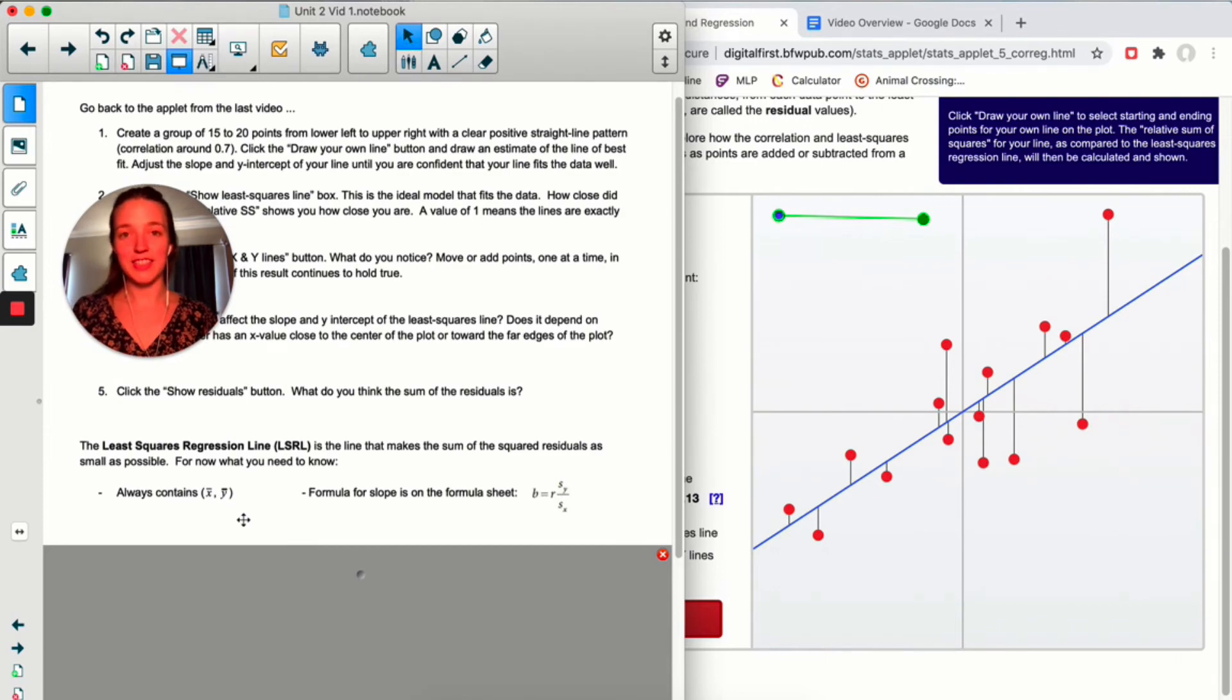These are the two things you have to know about the least squares regression line for now, other than the definition. It always contains this point, x bar, y bar, which is mean of x, mean of y. And the formula for finding the slope of the least squares regression line is as follows. It's actually on the formula sheet. This is copied directly from the formula sheet. Now remember, for whatever reason in statistics, we use b to mean the slope. Just to confuse you, I guess. The slope of the line equals r times the standard deviation of y over the standard deviation of x. Let's use this in an example. You can see how it works.